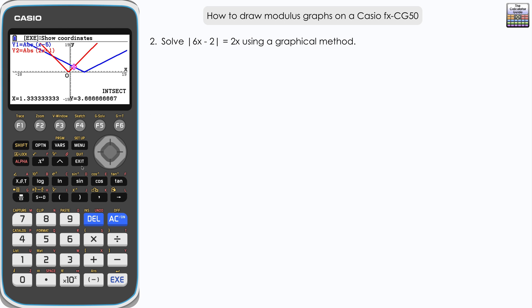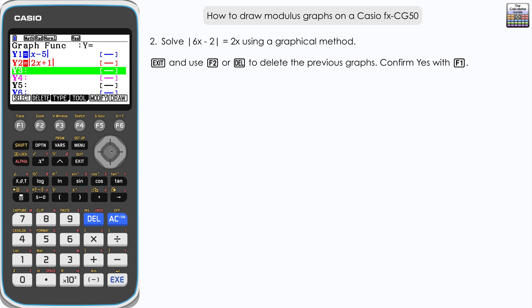Second question: solve the modulus of 6x minus 2 equals 2x using a graphical method. We're going to plot these two graphs on the calculator. Press exit and then delete these off, F2 and F1 to confirm.